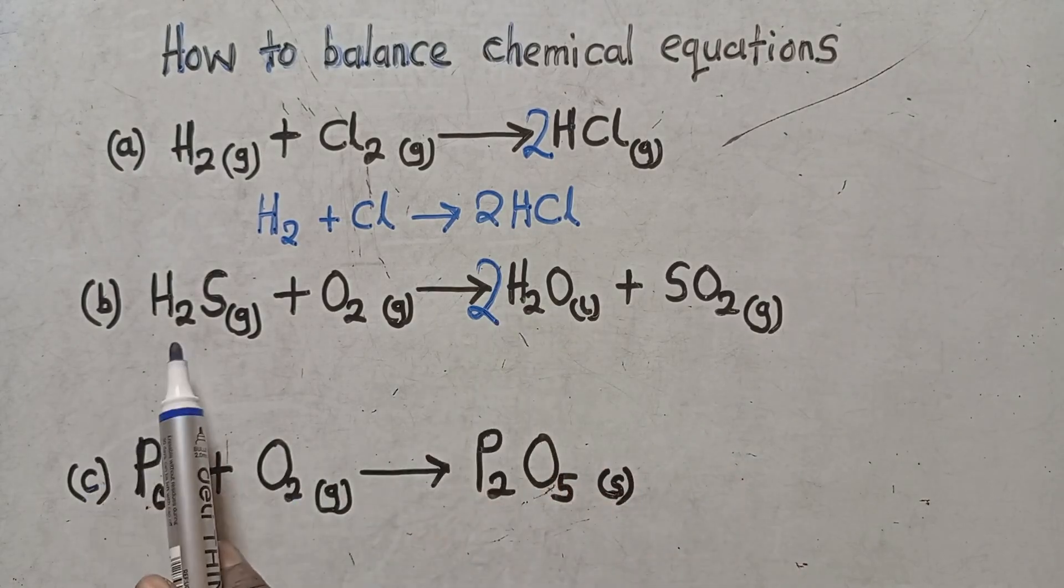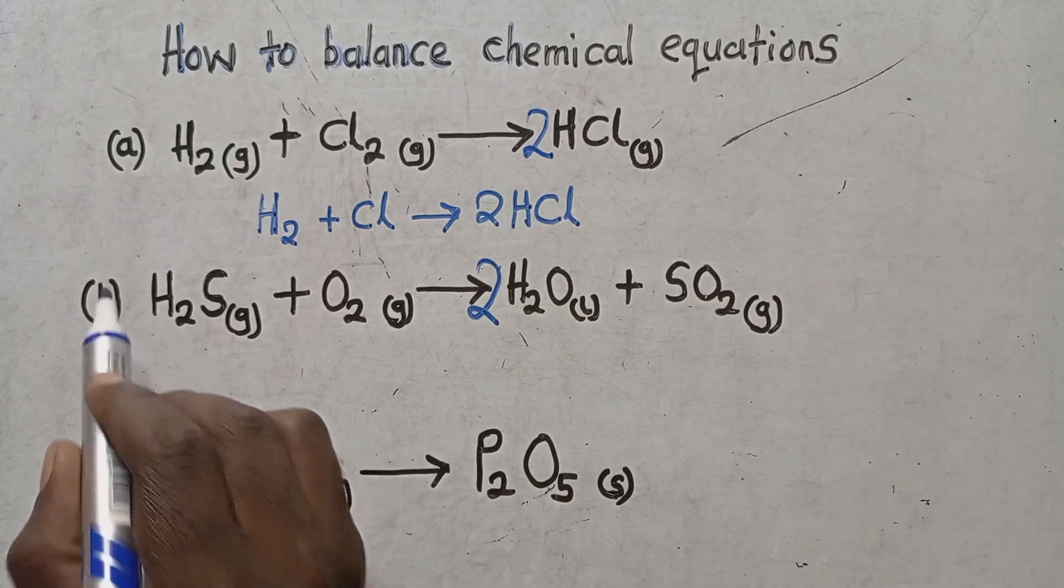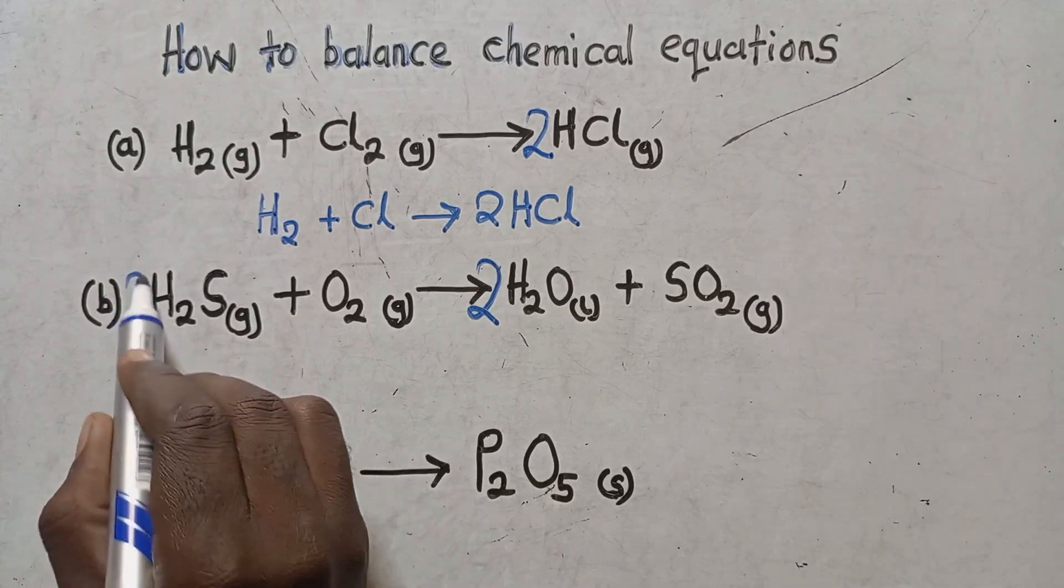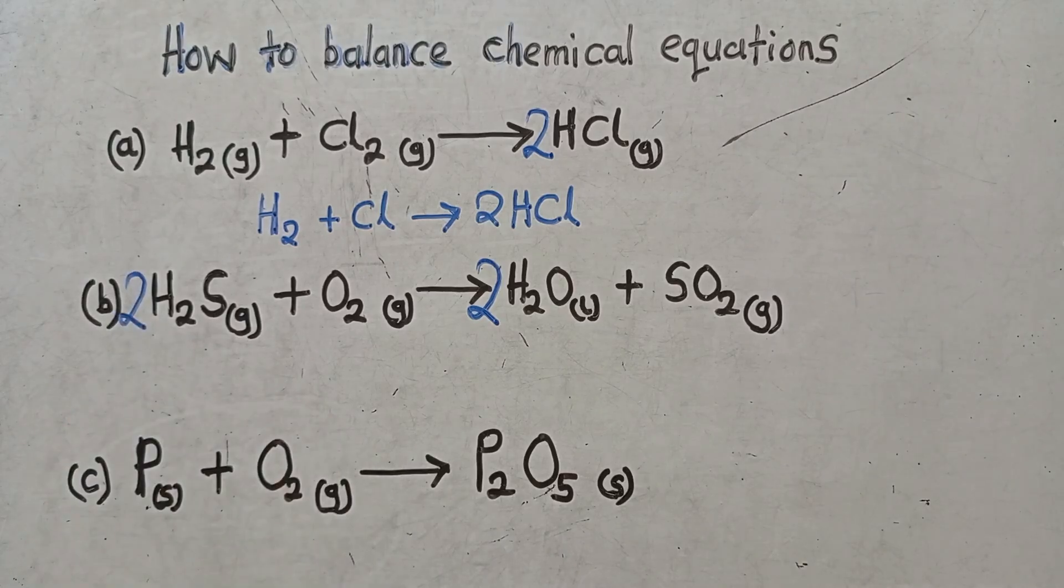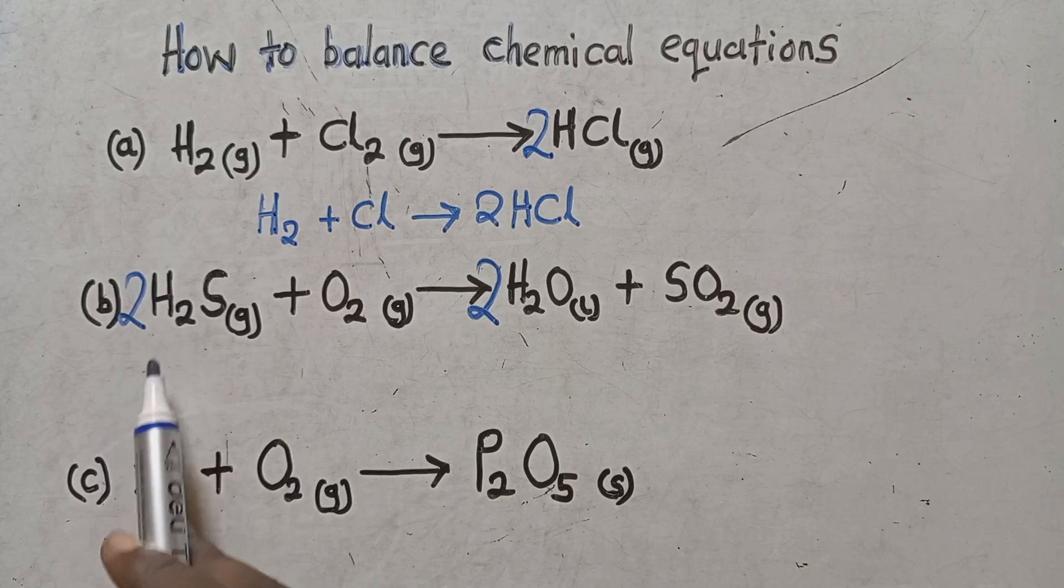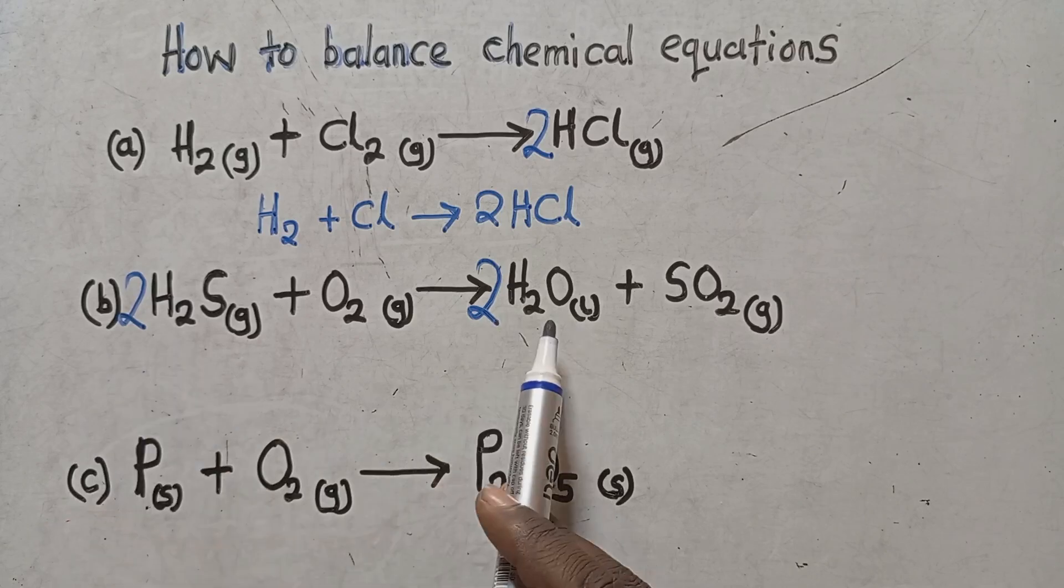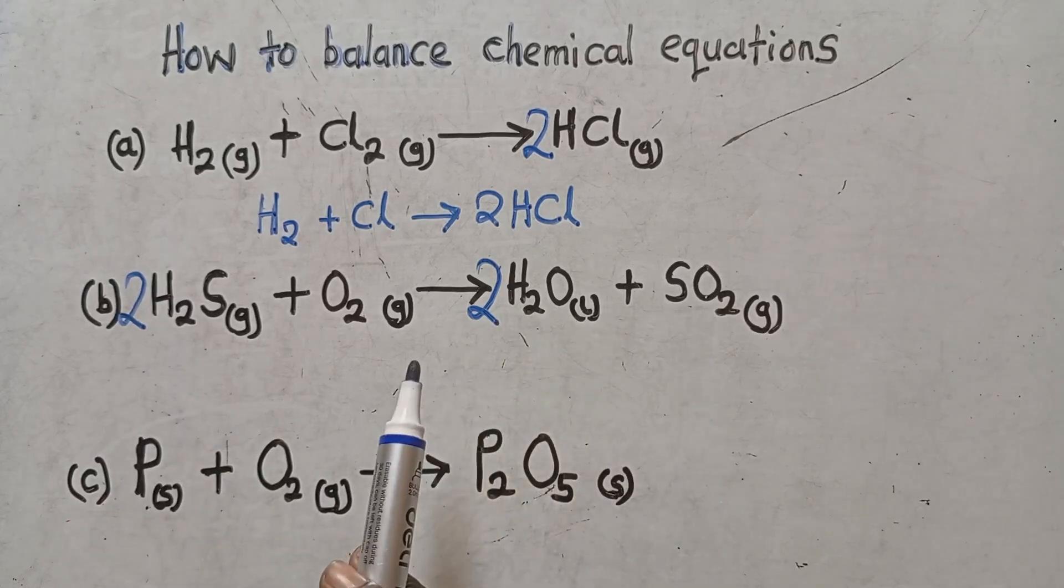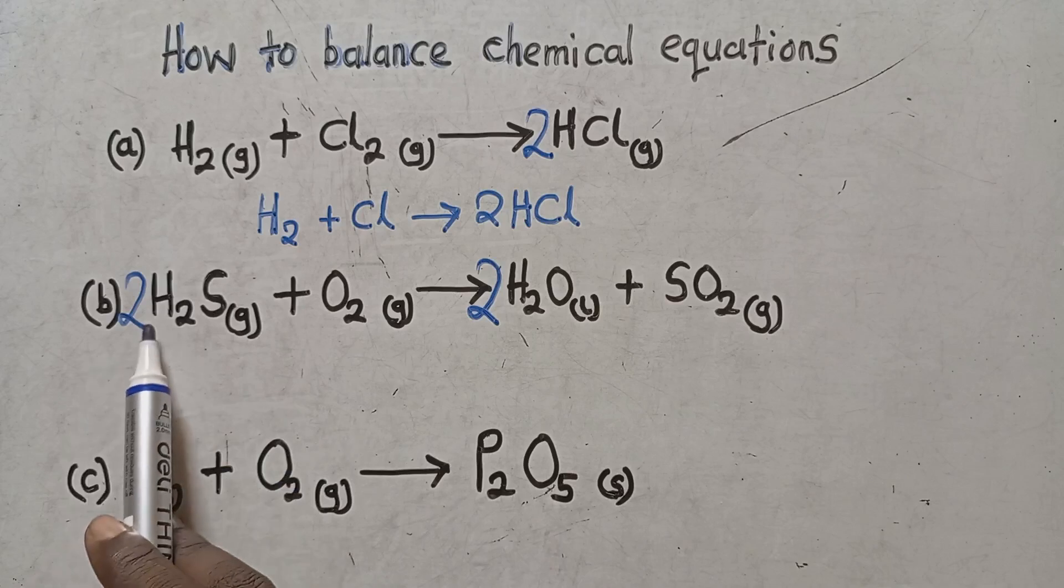So when you put a two there, meaning atoms of chlorine there are four. This side how many are they? There are two. So you put a two here. Once you put a two there, I'm showing you how to balance chemical equations.